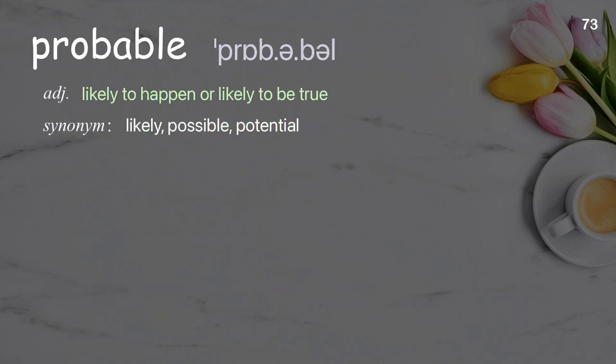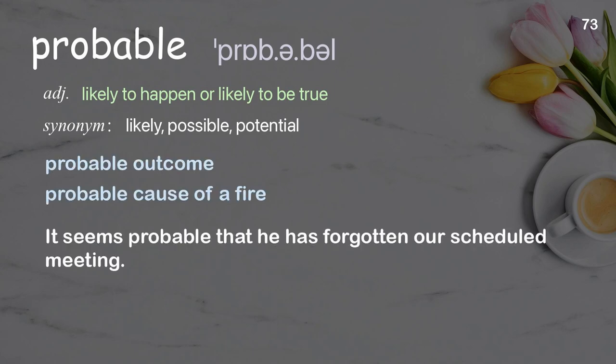Probable: Likely to happen or likely to be true. Examples: Probable outcome, probable cause of a fire.